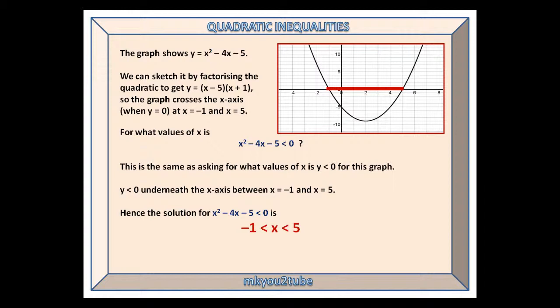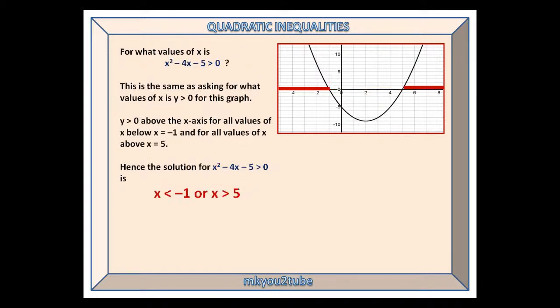Hence the solution for x squared minus 4x minus 5 less than 0 is minus 1 less than x less than 5. Just the one region.